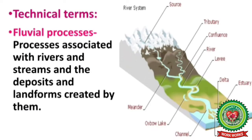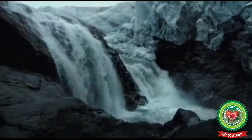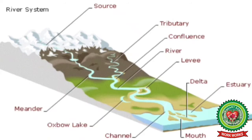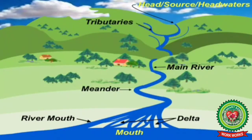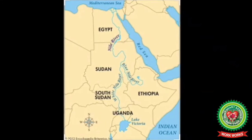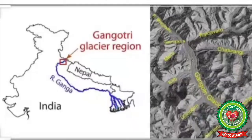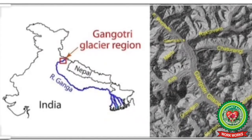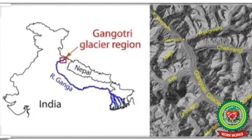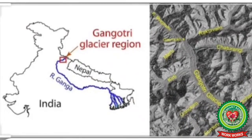The first term is fluvial processes — processes associated with rivers and streams, and the deposits and landforms created by them. The second term is source of a river — the place where a river begins. Mostly the source of rivers lies in the mountains or in some lake. For example, Lake Victoria is the source of the River Nile, and the Ganga, about 2704 kilometers long, has its source in the Gangotri Glacier at a height of 1680 meters.